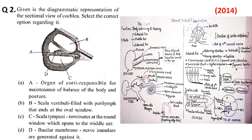तो oval end क्या है — cochlea में fenestra ovalis यह oval end होता है, और rounded end जो fenestra rotundum है, तो यह tympanum में मिलता है। तो B option भी सही है। C option — scala tympani देखिए, यह portion scala tympani का है, terminates at the round window which opens to the middle ear। तो option C भी right है।